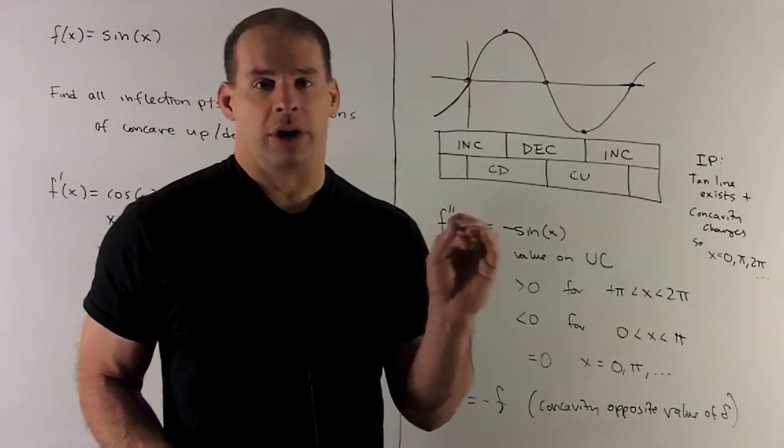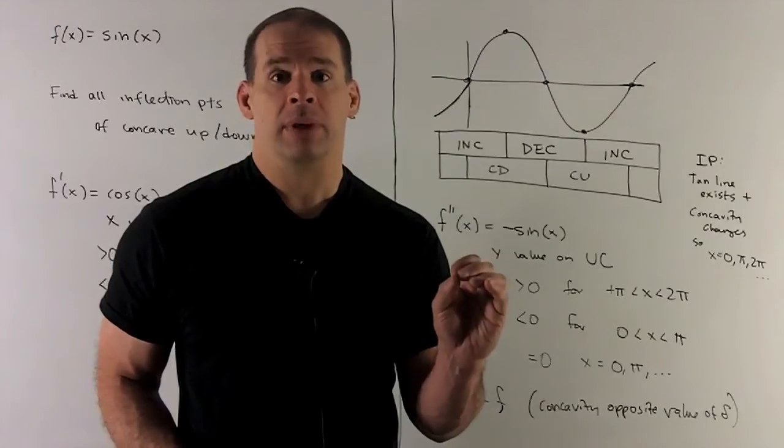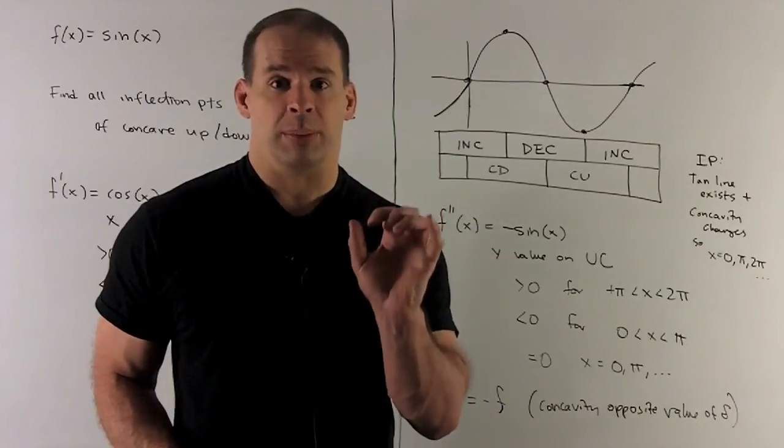Again, we'll alternate between concave up and concave down. Now, the length of each region is going to be pi.